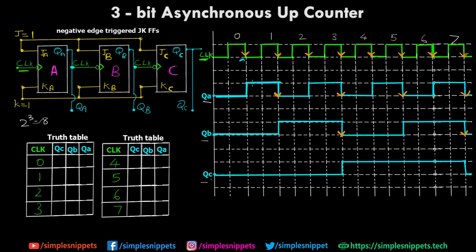This is the output diagram in terms of signals on the clock cycle diagram chart. At every stage — QA, QB, and QC — the time period is getting doubled. The time period of QA is double that of the original clock, the time period of QB is double that of QA, and the time period of QC is double that of QB. So every time the time period is doubling and the frequency is getting halved. However, we are focused on understanding how the values are counted by this asynchronous counter.